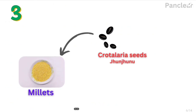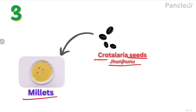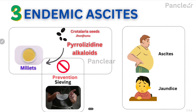The third disease is endemic ascites, related to millets. In millets, Crotalaria seeds — black seeds, commonly called Junjunu — can be mixed in. When we consume it, these Crotalaria seeds have a toxin called pyrrolizidine alkaloids. This toxin is hepatotoxic — it affects the liver.